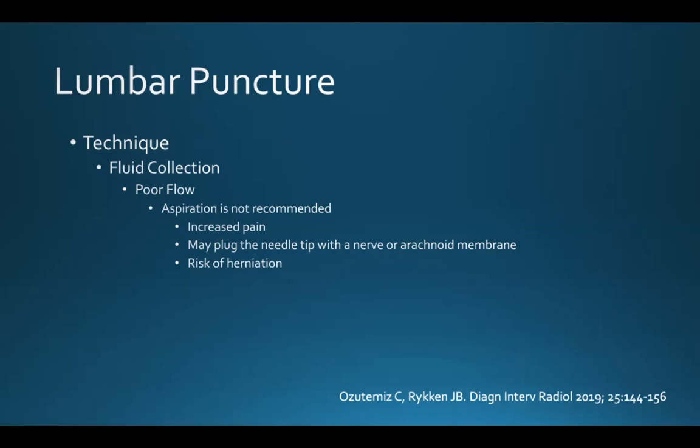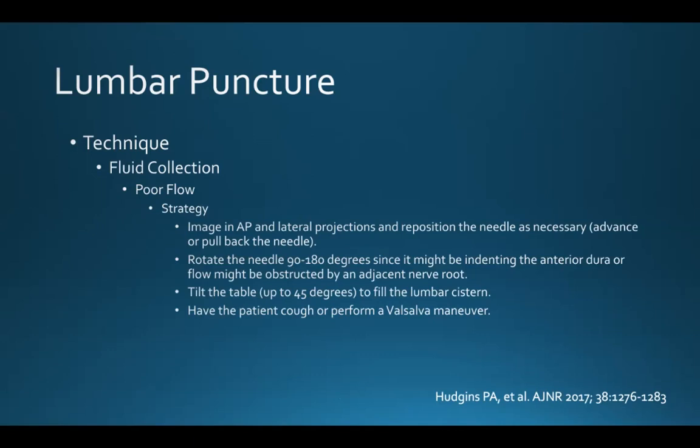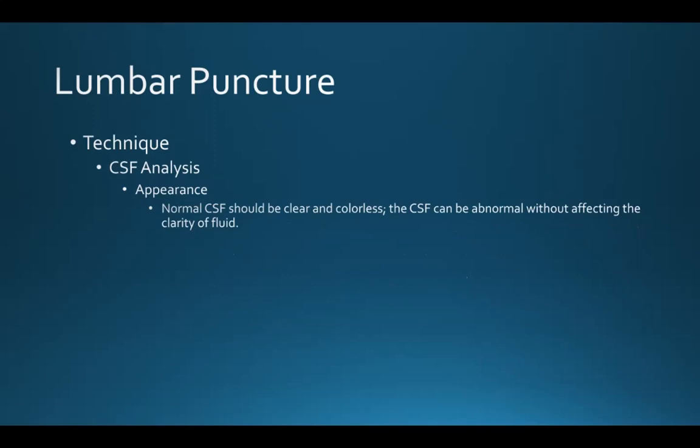You certainly don't want to aspirate fluid from the subarachnoid space, as this can lead to increased pain, may plug the needle tip with a nerve or arachnoid membrane, and may lead to a risk of herniation. If you have poor flow, image in the AP and lateral projections and reposition the needle — often by advancing or pulling back. You can rotate the needle 90 to 180 degrees since it might be indenting the anterior dura or flow might be obstructed by an adjacent nerve root. You can also tilt the table up to 45 degrees to fill the lumbar cistern, or have the patient cough or perform a Valsalva maneuver.